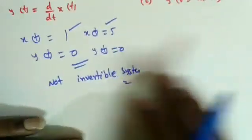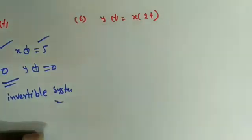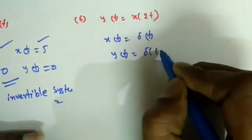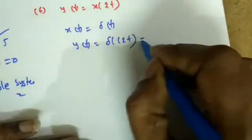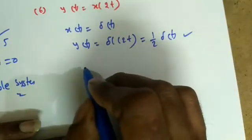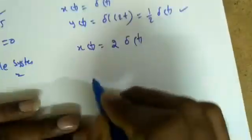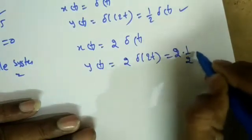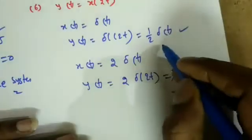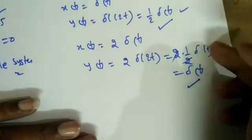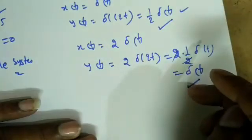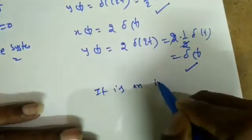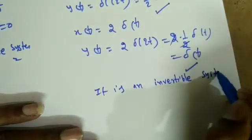Last question: y(t) = x(2t). Is it invertible? If x(t) = δ(t), then y(t) = δ(2t) = (1/2)δ(t). If x(t) = 2δ(t), then y(t) = 2δ(2t) = 2·(1/2)·δ(t) = δ(t). These are different outputs. Different inputs give different outputs, so the system is invertible. Also, giving δ(t) and u(t) as inputs would give definitely different outputs as well.